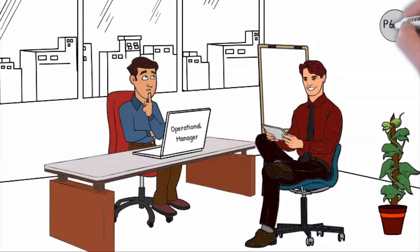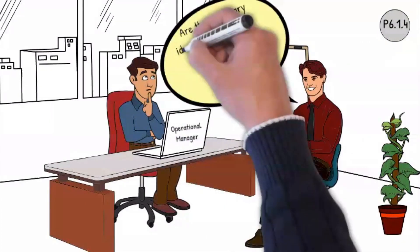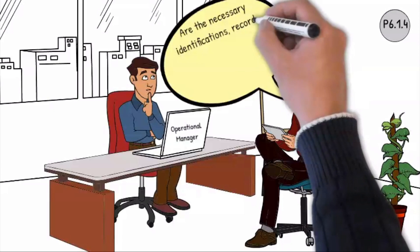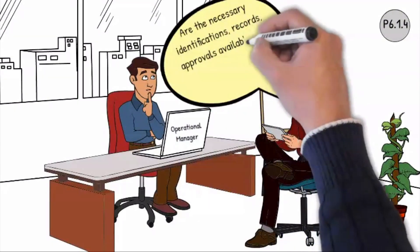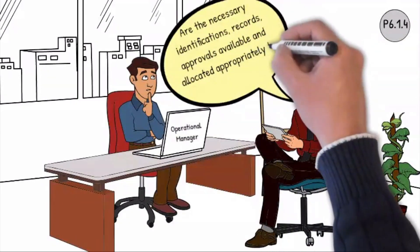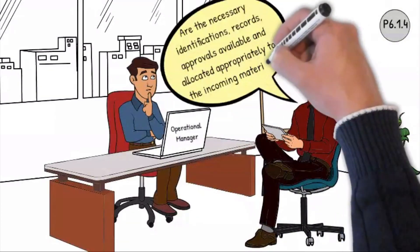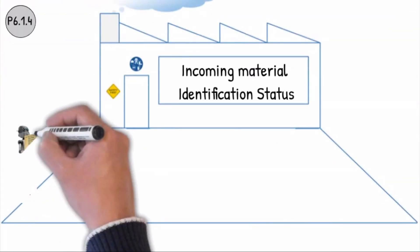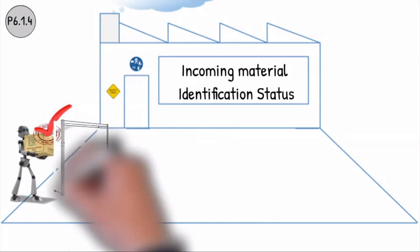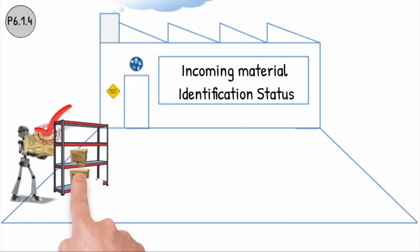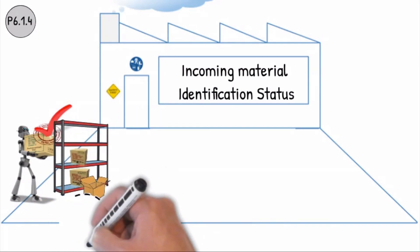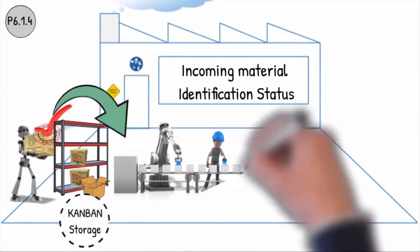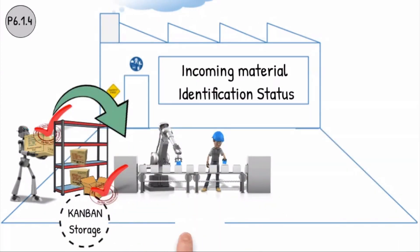Question P6.1.4: Are the necessary identifications, records and approvals available, and allocated appropriately to the incoming materials at the consecutive process steps? The released incoming materials status must be clearly identified and recognisable at each sequential production step, and the release identification on bundles, batches, Kanban boxes and semi-finished and finished parts must be defined during all the production steps.